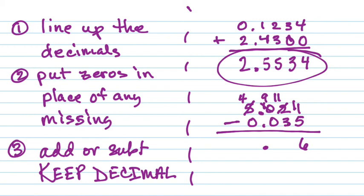11 minus 3 is 8. 9 minus nothing is 9. 4 minus nothing is 4. So my completed answer: 4.986.